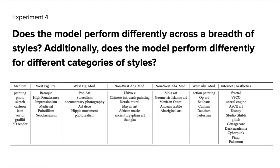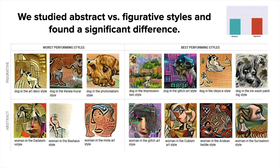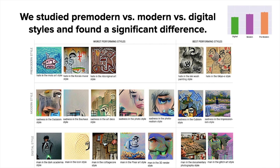In the fourth experiment, we wanted to see if the model would perform equally well across a breadth of styles, and whether it would perform differently for different traditional styles. To rigorously investigate this, we looked at three different partitions of styles: abstract vs. figurative, Western vs. non-Western, and styles partitioned by time period. We generated from 51 styles that balanced these different partitions across 12 subjects. We found that the model performed better on some styles than others — significantly better on figurative styles as opposed to abstract styles — and the differences between digital, modern, and pre-modern art styles were also significant.